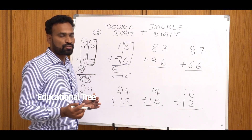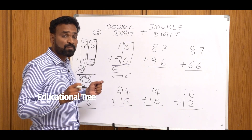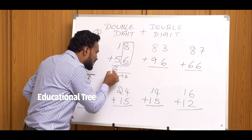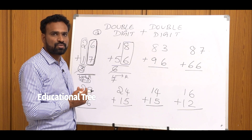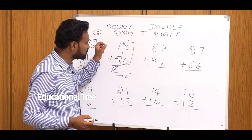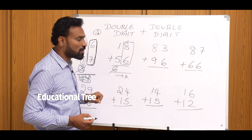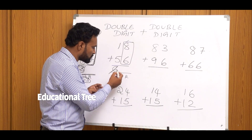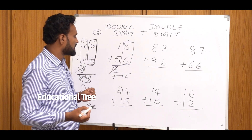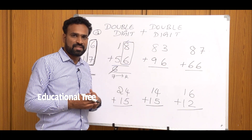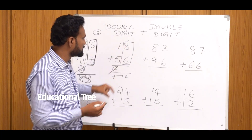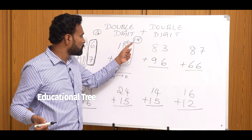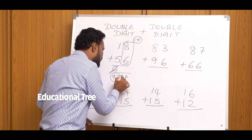Since there is a Carry Combination, we add 1 more — so 6 becomes 7. There is still a carry combination, so we apply the End Number. The sum of 8 and 6 is 14. In 14, the units digit is 4. So 4 is the End Number. The final answer is 74.